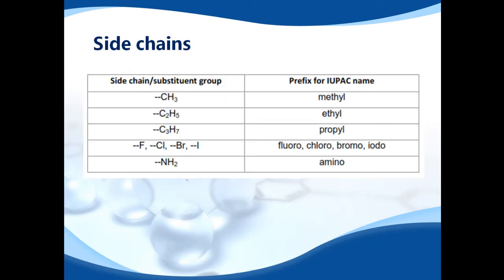Side chains. So how do you name side chains? CH3 is methyl, C2H5 is ethyl, C3H7 is propyl. If you have a group seven elements such as fluorine, chlorine, bromine, or iodine, it changes to fluoro, chloro, bromo, or ido. And NH2 becomes amino.